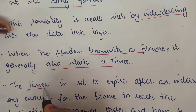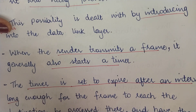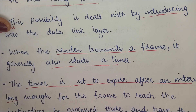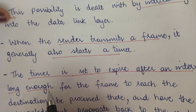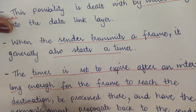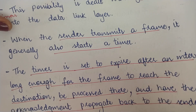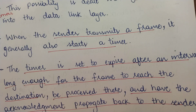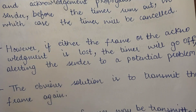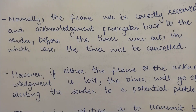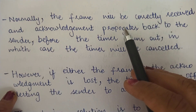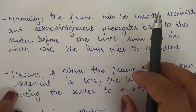The timer is set to expire after a particular time interval — typically enough time for the frame to reach the destination, be processed there, and have the acknowledgement propagate back to the sender. If within this time interval the sender does not receive an acknowledgement and the timer expires, the sender assumes there was some problem with the transmitted frame and will retransmit it.